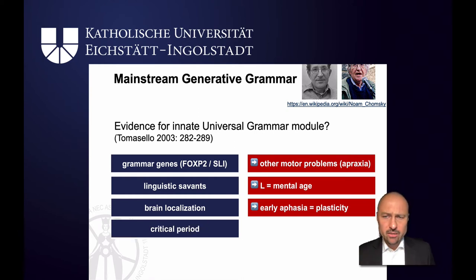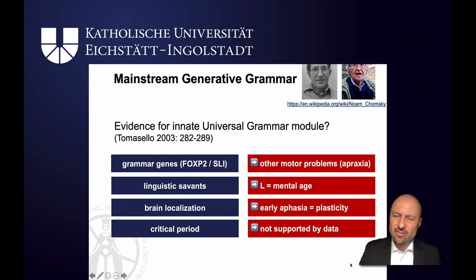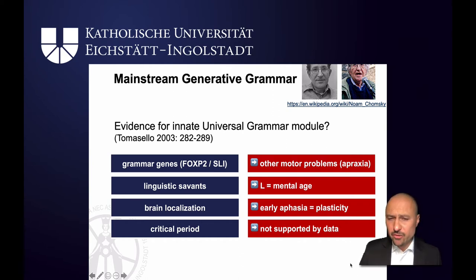Some people claim that there's a critical period: for language to mature, you need linguistic input before the age of six or twelve, and if you don't get that, your language won't develop normally — which would seem genetically encoded. But the evidence for this is not convincing. It is obvious that the younger you learn a language the better you will be, but that pretty much applies to all cognitive skills. The earlier you start riding a bike or doing maths, the better you get. Researchers haven't been able to clearly identify a critical period that would argue for an innate universal grammar.